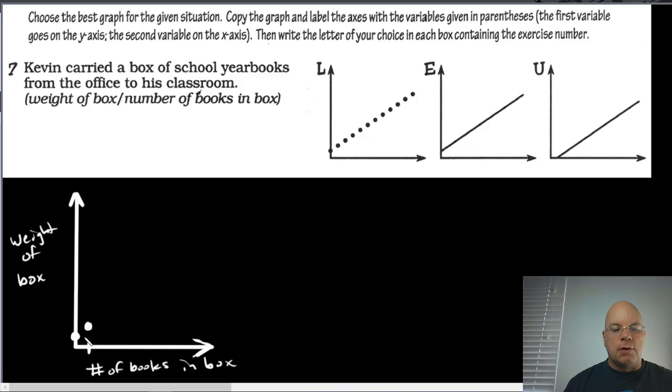With two books inside it weighs one pound more than it did before, so three pounds. And so our graph is going to have this discontinuous look where each extra book increases the weight instantly to some higher weight. That's why L is the best choice in this case.